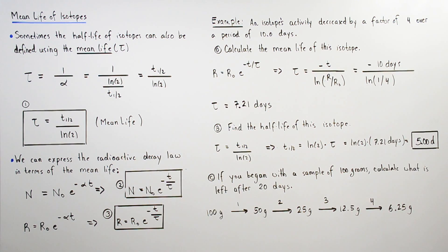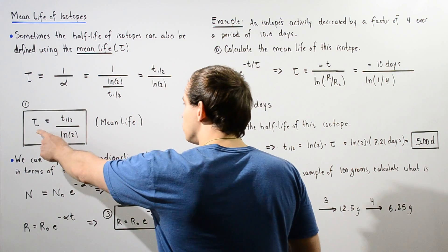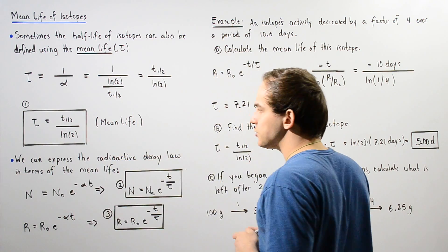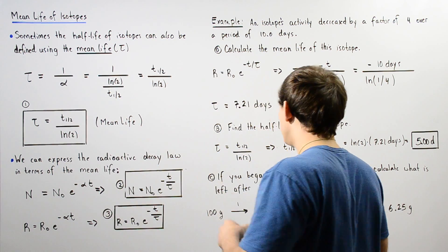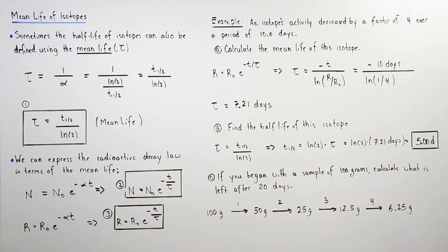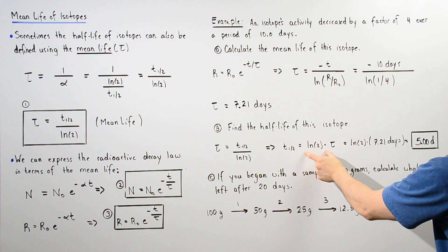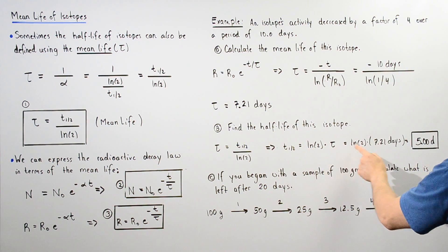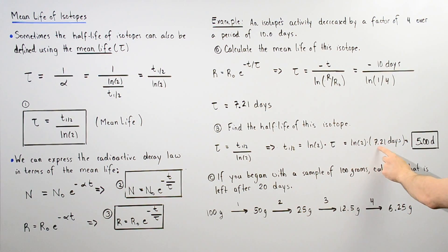For part B, to calculate the half-life, we apply equation 1. Since we know tau, we rearrange to solve for the half-life: the half-life equals the natural log of 2 multiplied by the mean life of 7.21 days, which gives us approximately 5 days.